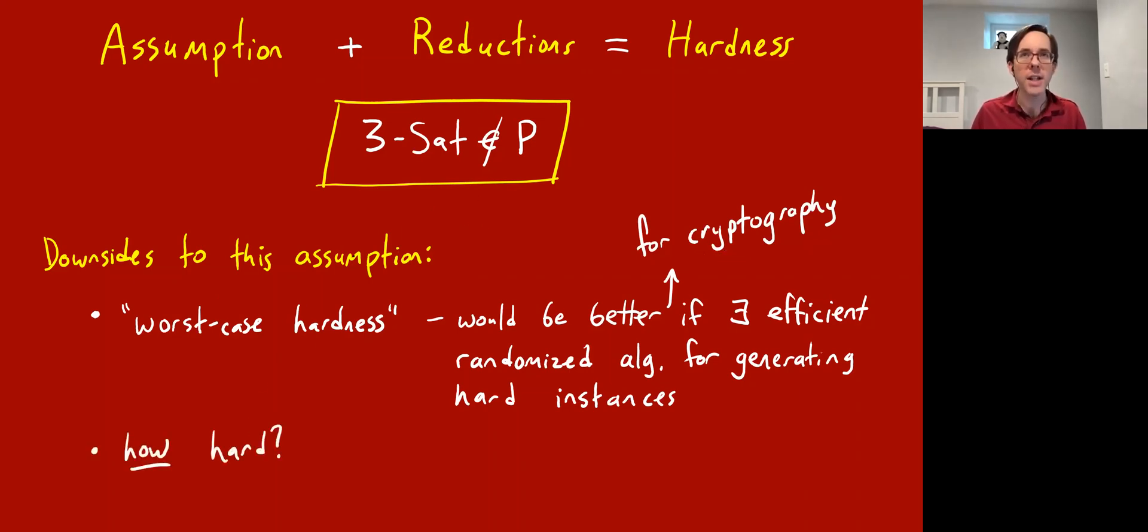So that's one downside to just this P does not equal NP assumption. And the other downside is it's a little bit vague on how hard this 3-SAT problem is. It conjectures that it's not in polynomial time. It is in 2 to the n time, but this conjecture by itself does not say much about how hard 3-SAT is. So you might be like, okay, it's not in polynomial time, but could it be in n to the log n time? Or could it be in 2 to the root n time? Or could it be in 1.3 to the n time?